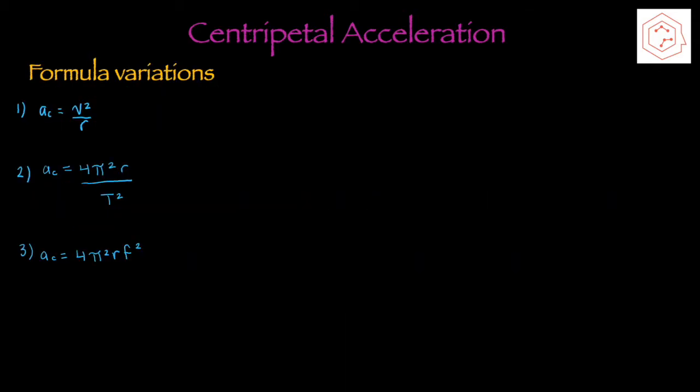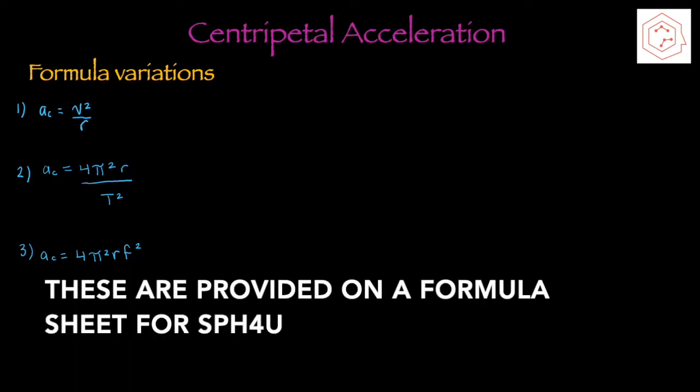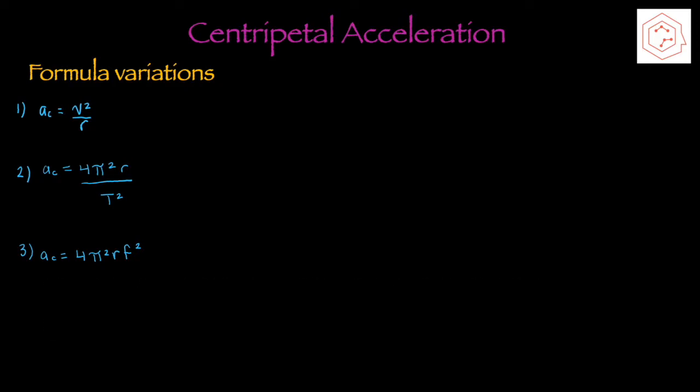There are three different formula variations of centripetal acceleration. The Nelson textbook goes through the derivations, however this is not needed on tests usually. The first one is ac = v² / r, the second one is ac = 4π²r / T², where T is the period, and the third equation is ac = 4π²rf².